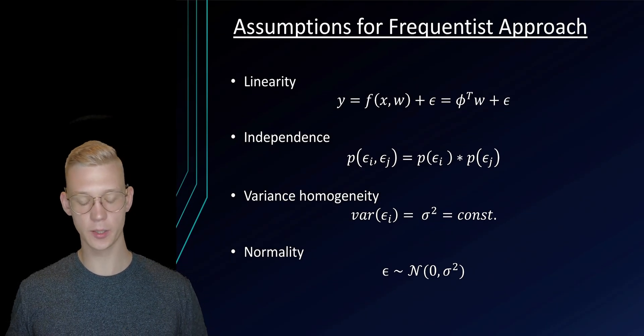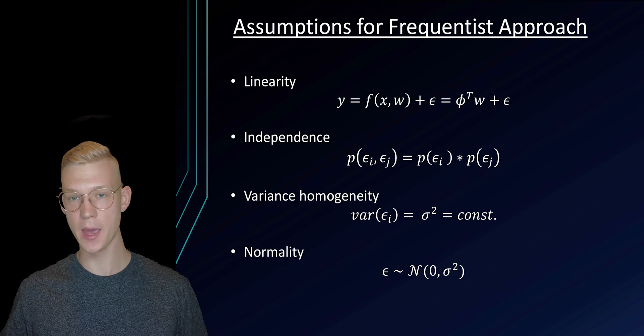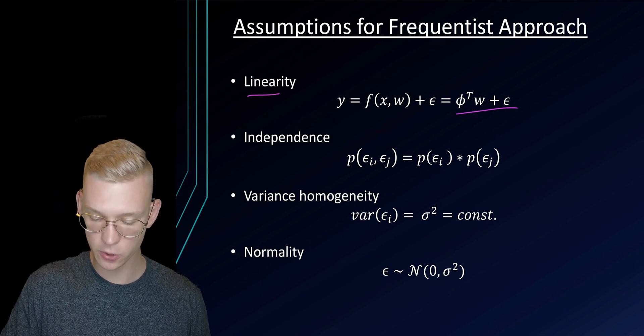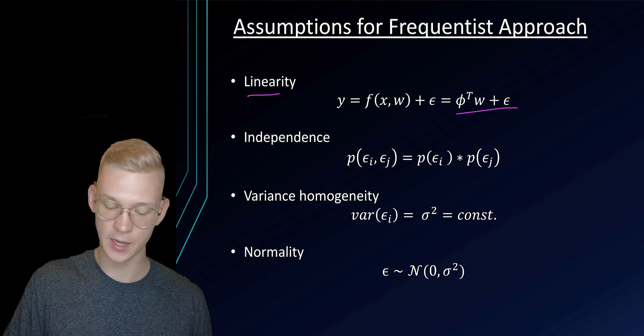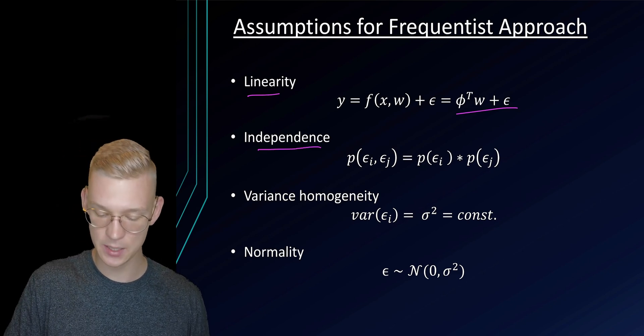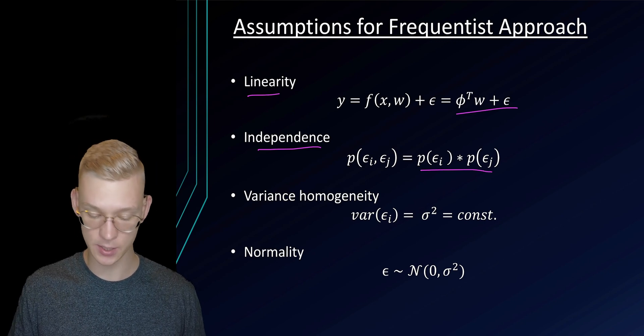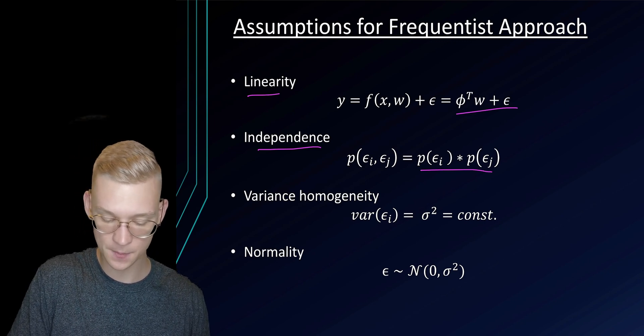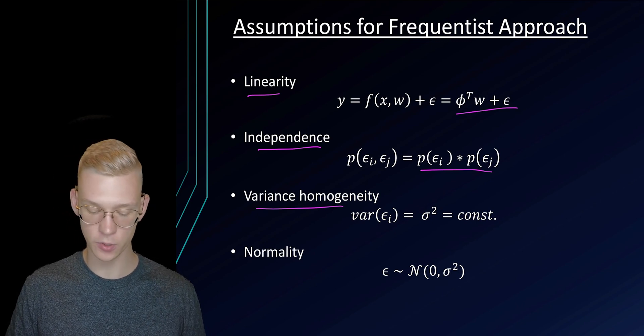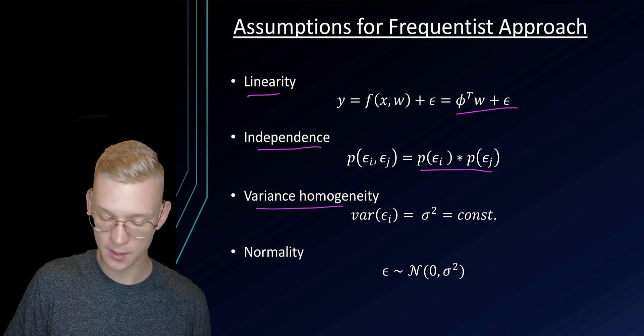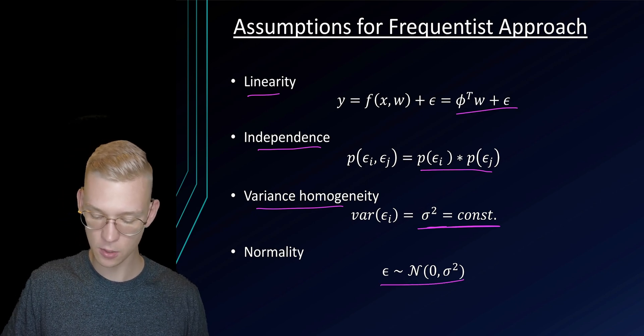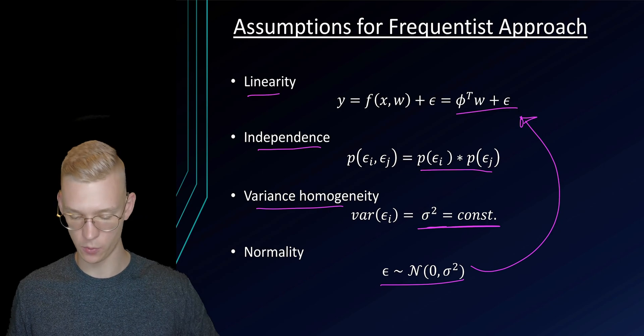Now what assumptions did we make to get to that solution? First is that we have a linear basis function model, that our noise and thus our observations are independent and identically distributed, then we said that all of those independent observations had the same variance, and the mean of our noise is equal to zero.